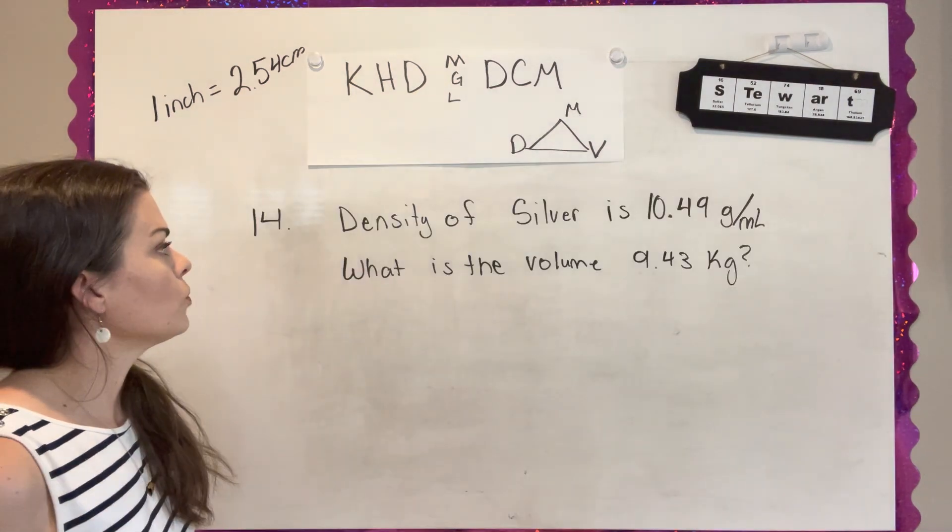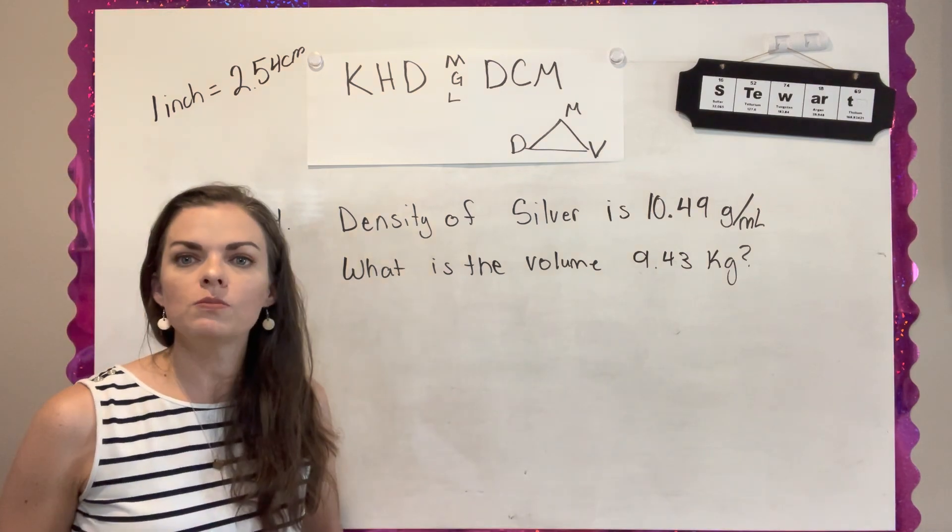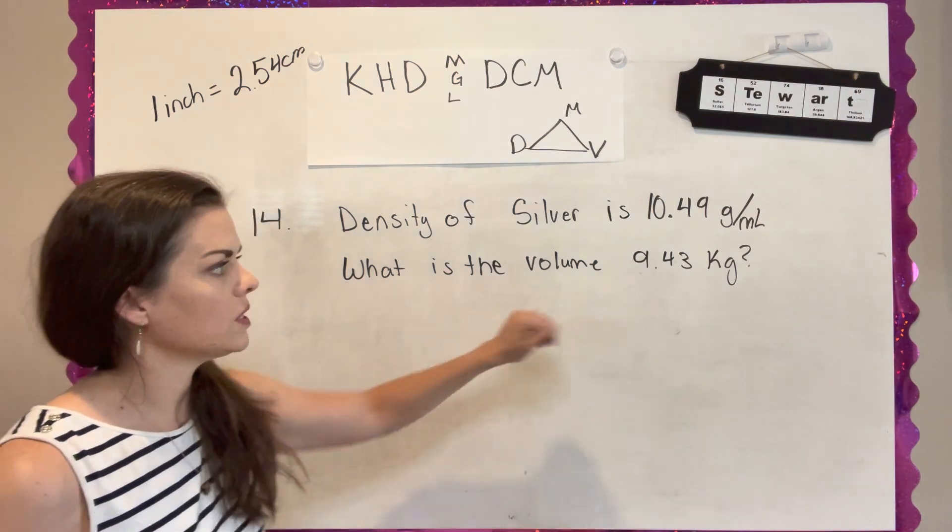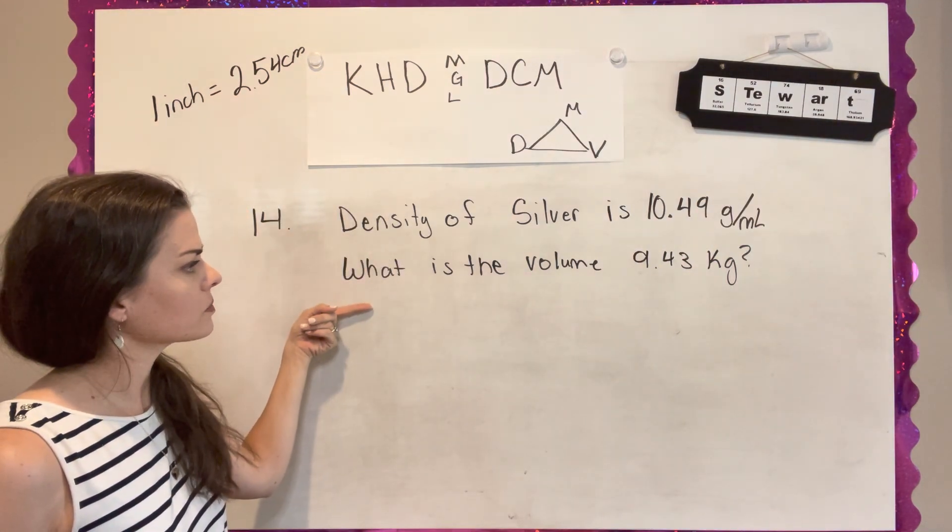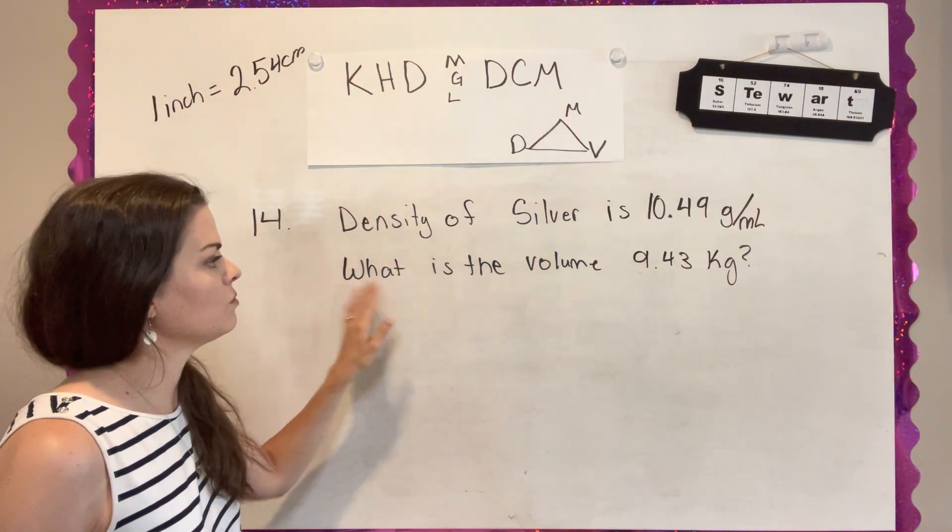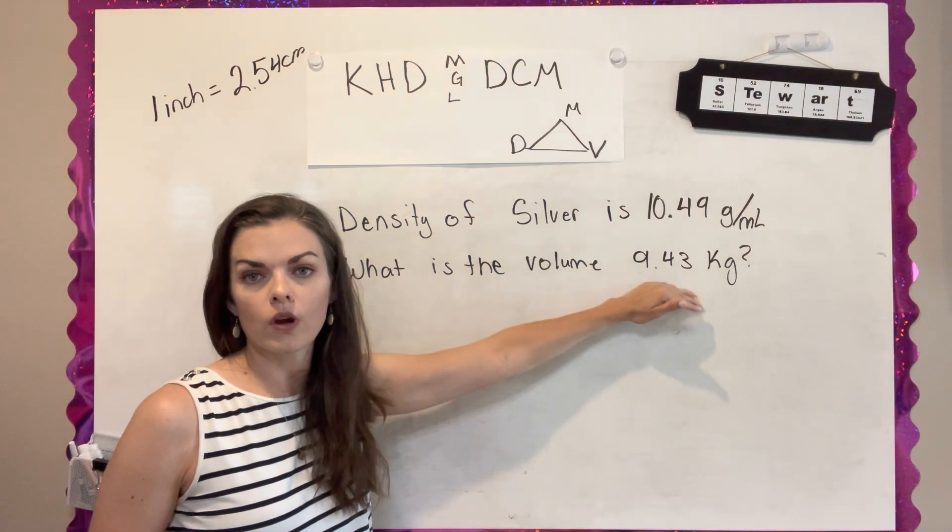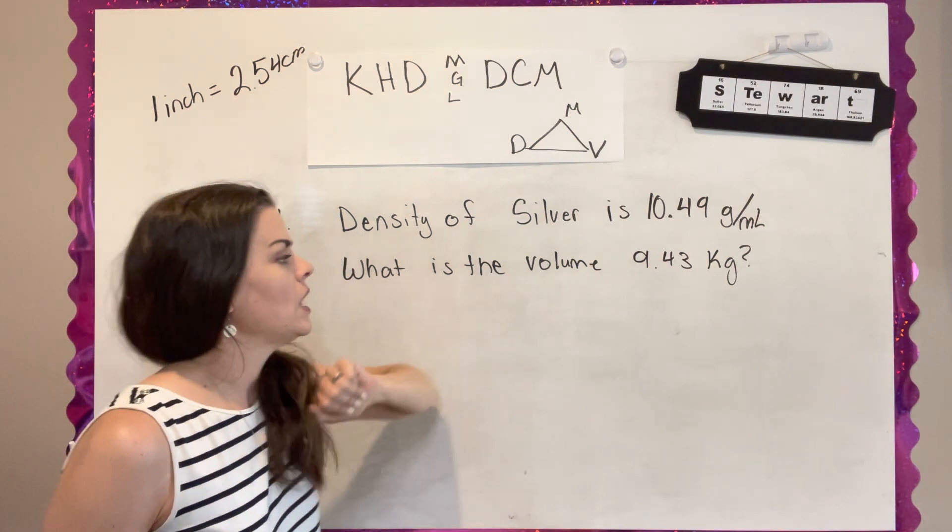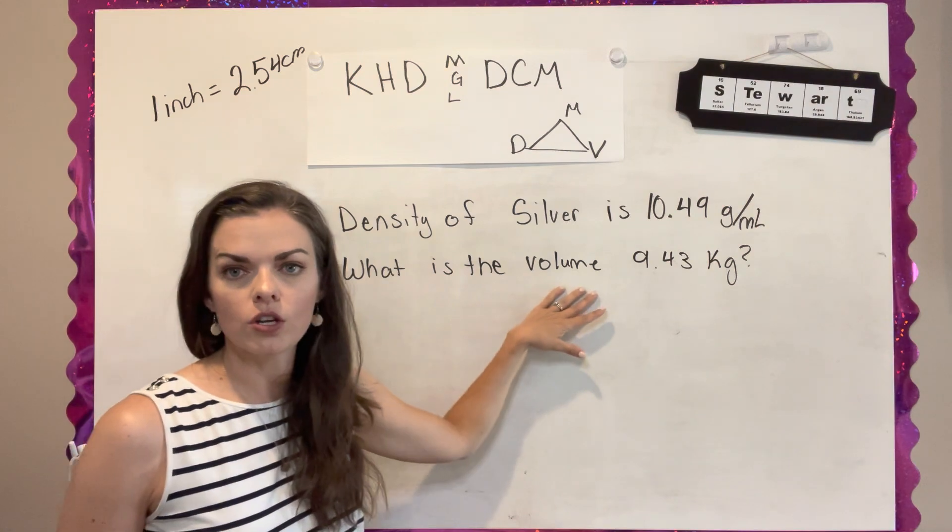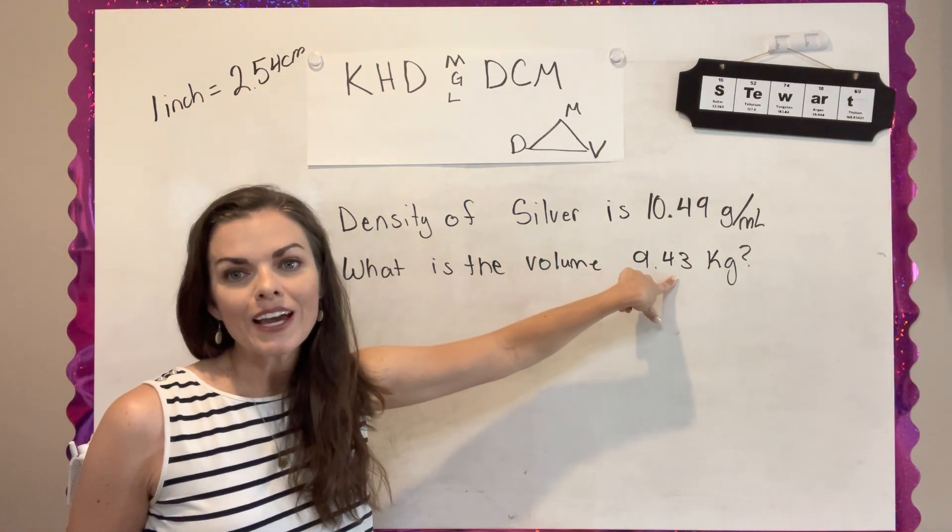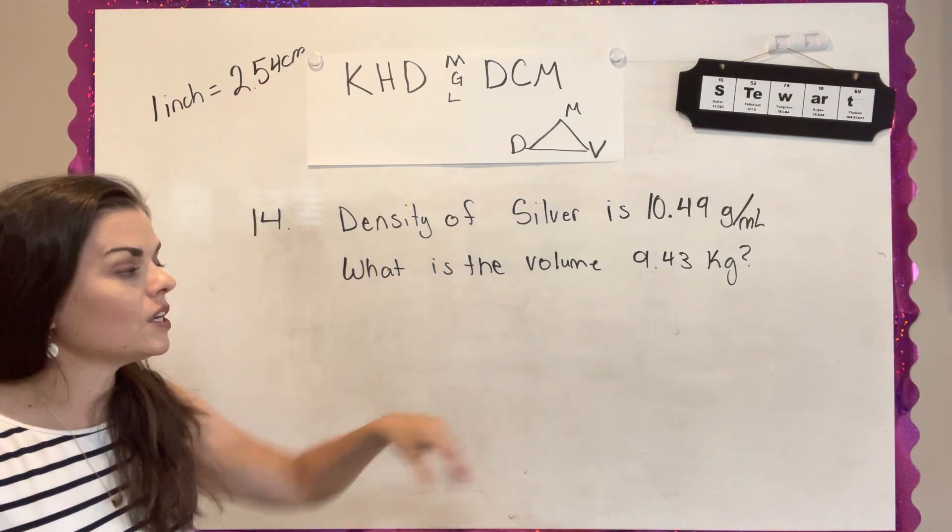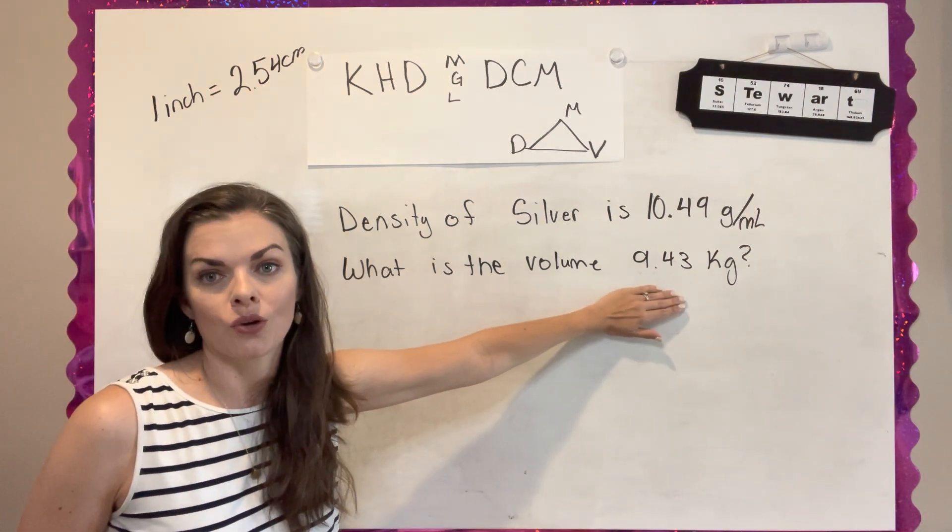So number 14 is another density problem. It gives me the density of silver. It tells me it's 10.49 grams per milliliter. And then I have a sample. And the sample that they give me is 9.43 kilograms of grams. That's a mass. And it's asking me to find the volume. Now we've talked about when you do density, mass has to be in grams.